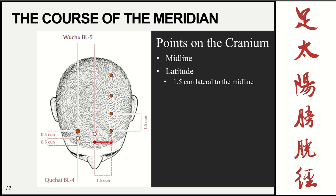Now we find the longitudinal measurements, which are found from the anterior hairline or from the previous point. For bladder 4, we go half a cun into the hairline. To find bladder 5, your two options are either going half a cun from bladder 4, or one cun from the anterior hairline. I prefer using the hairline because then we can find each point individually instead of having to find all the previous points. For instance, if you were trying to find bladder 8 you'd have to find all the previous points if you only knew the distances between them. Whereas if you know the distance from the anterior hairline you can go straight to bladder 8.